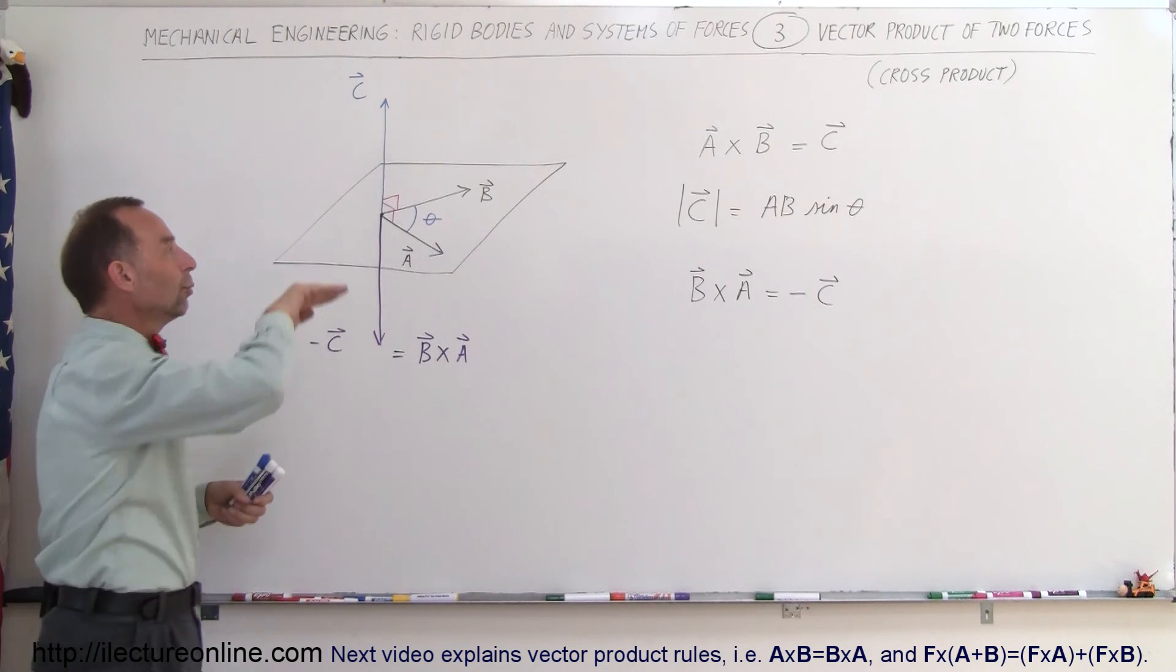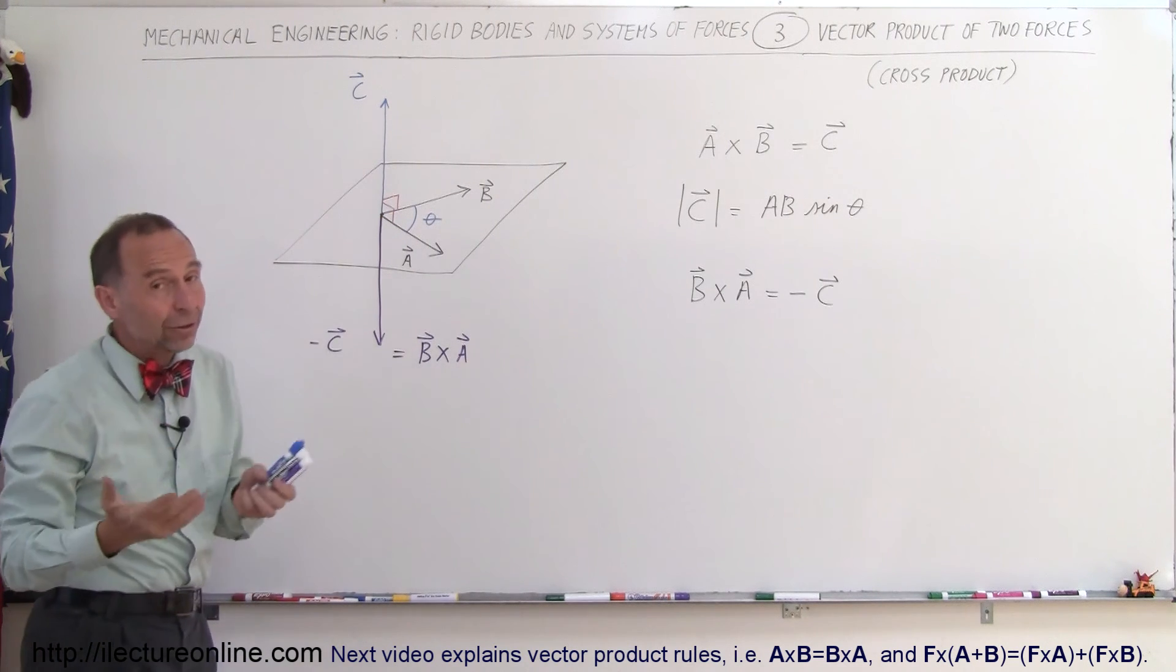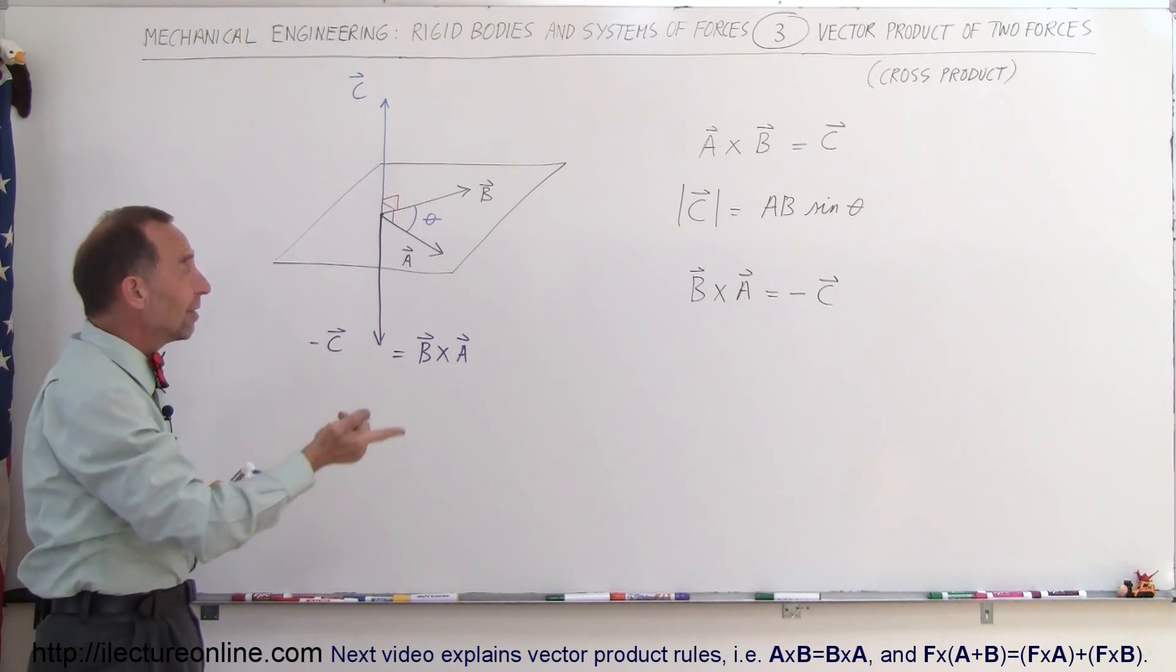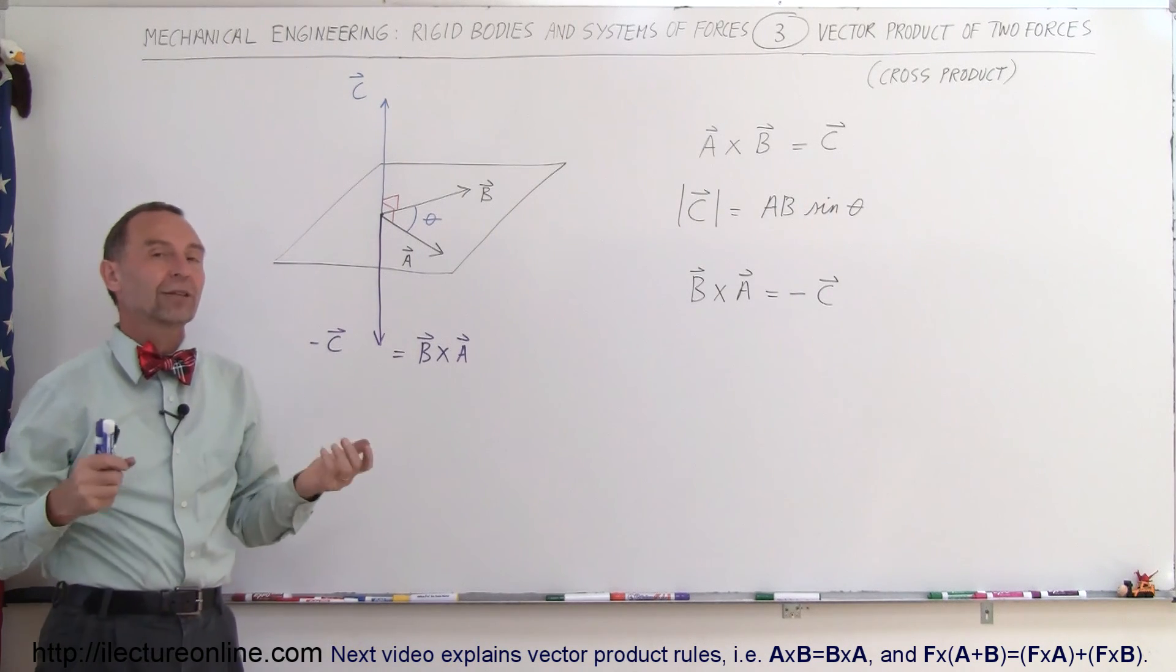Again, if we use the right hand rule, you point your fingers in the direction of B, you curl your fingers in the direction of A, you can see that the thumb will point downward instead of upward. Magnitude-wise is exactly the same. It's simply opposite in direction and that is what we mean by the vector product.